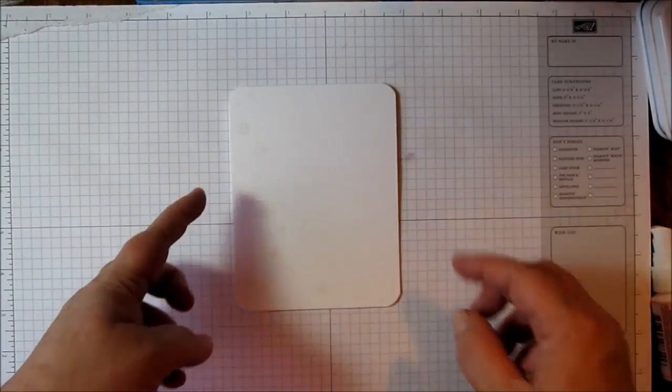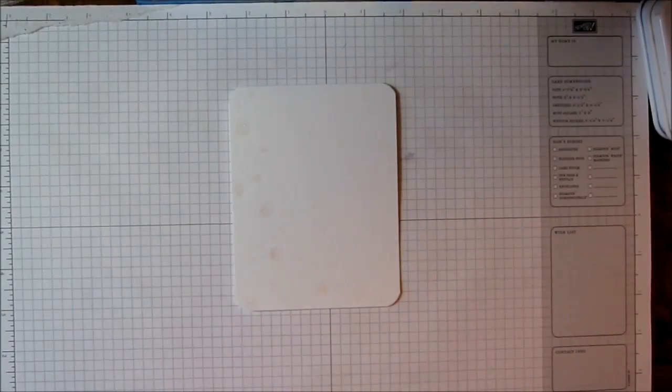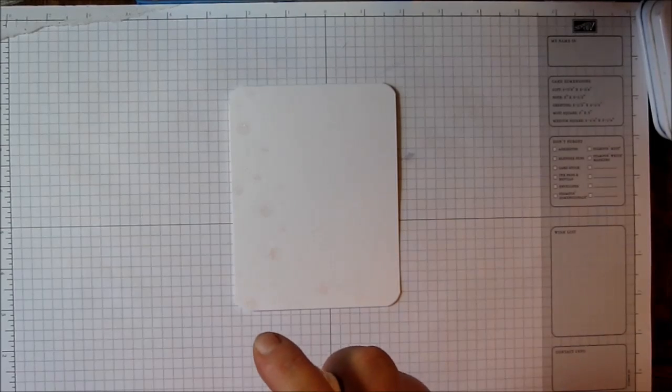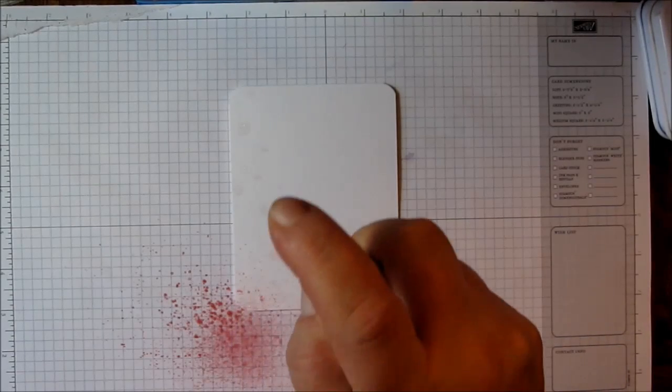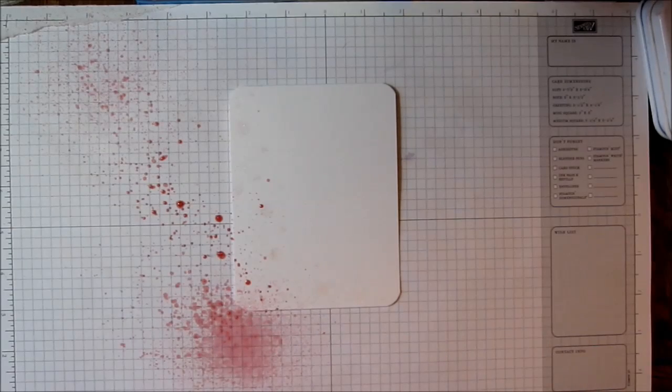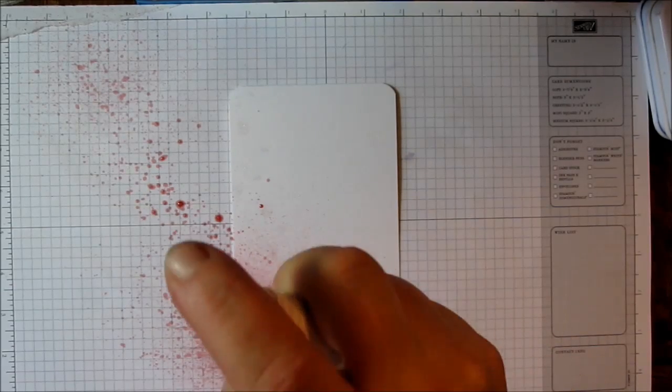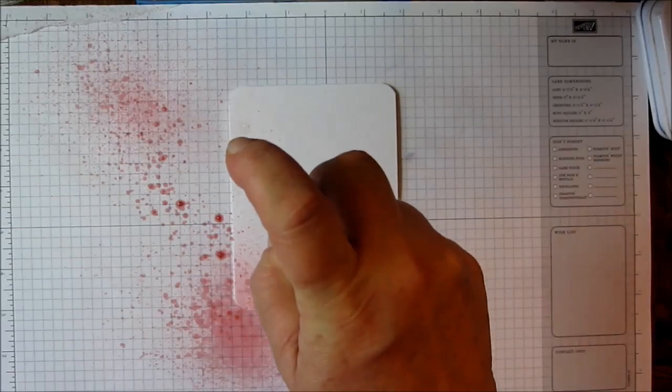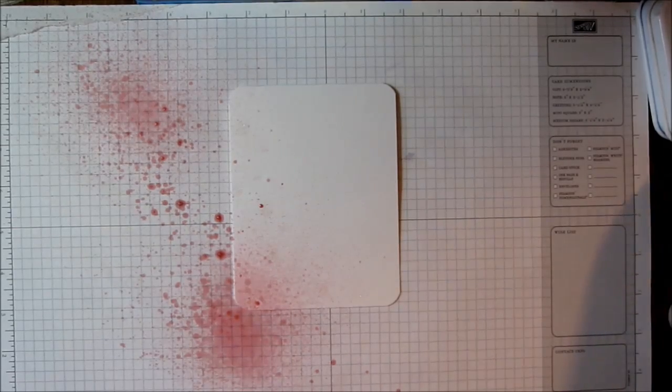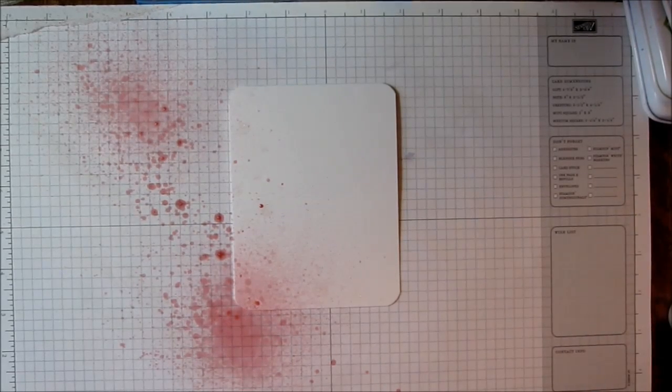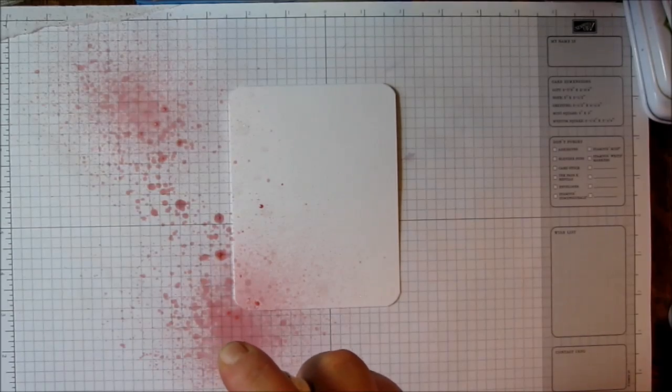I'm going to take that and spray a little bit of bubblegum, trying to do it off the page here so I don't get too much, and then I'm going to do a little bit of the artichoke.